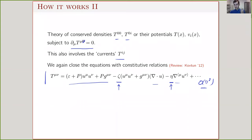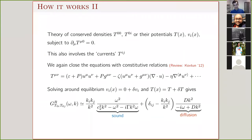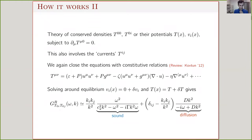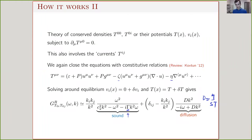Plugging the constitutive relation back into the conservation law leads to two types of modes. There's a diffusive mode in the transverse sector, where the diffusion constant is related to the shear viscosity — specifically η over (s·T). Then there's a sound mode with a speed of sound that depends on the equation of state of your QFT, and a sound attenuation rate involving the bulk viscosity and shear viscosity. These first-order-in-hydro terms resolve singularities and give width to these poles.